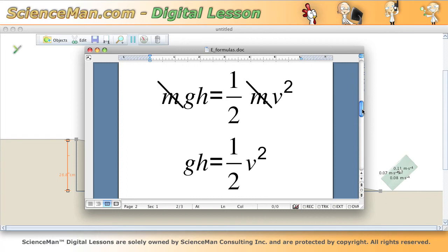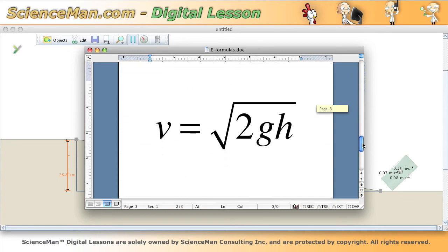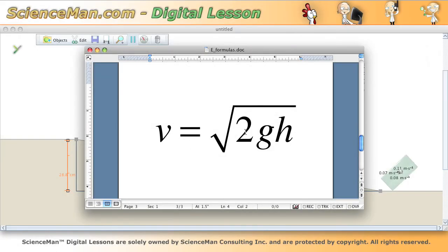Now if we rearrange that a bit we end up with this: velocity is equal to the root of 2gh, that is the root of 2 times the acceleration due to gravity times the height.